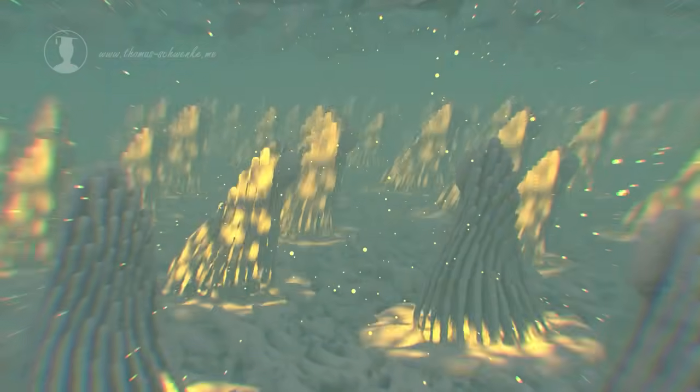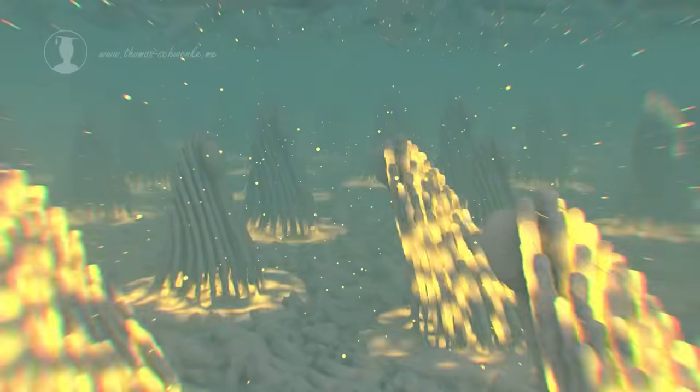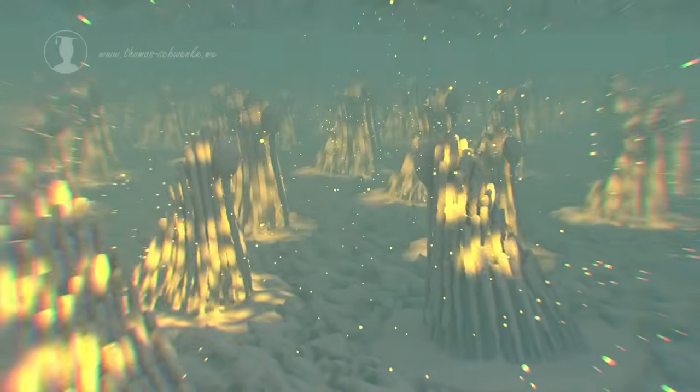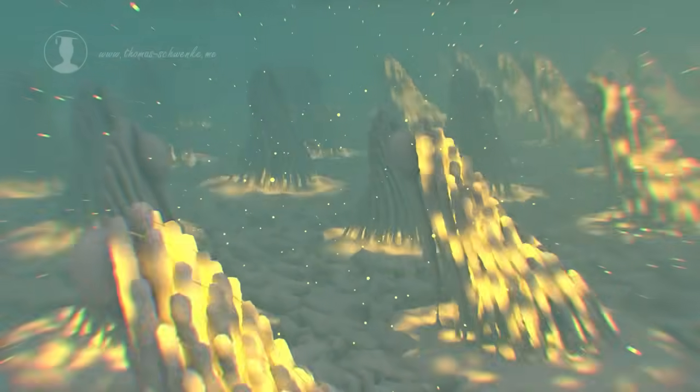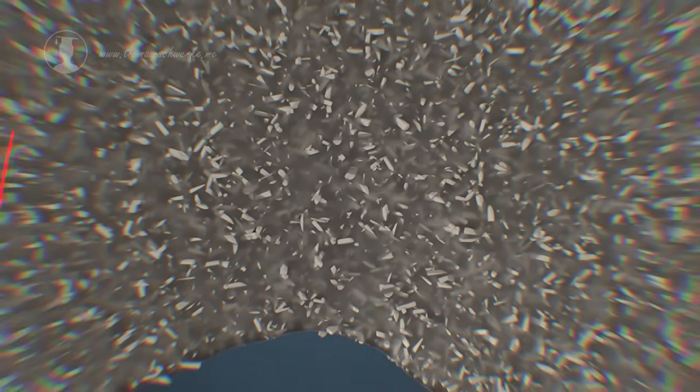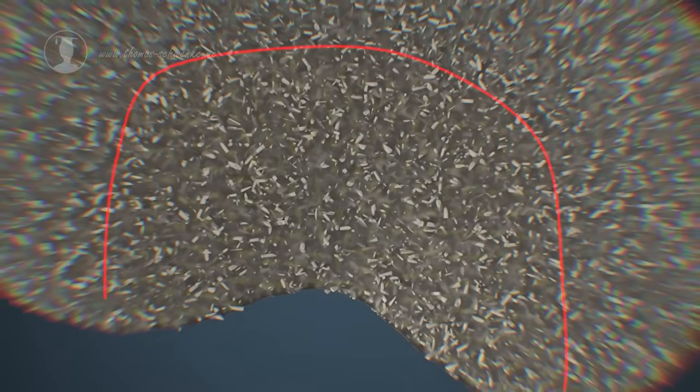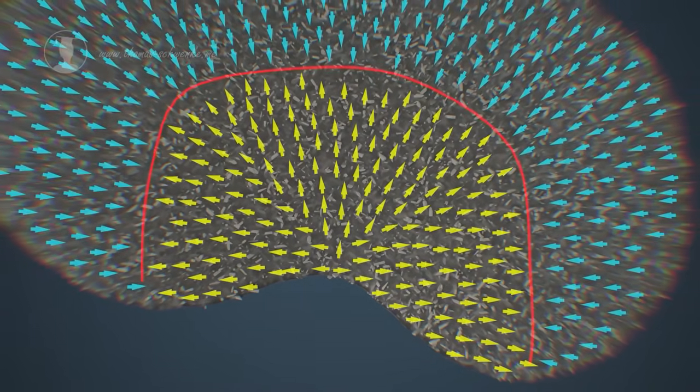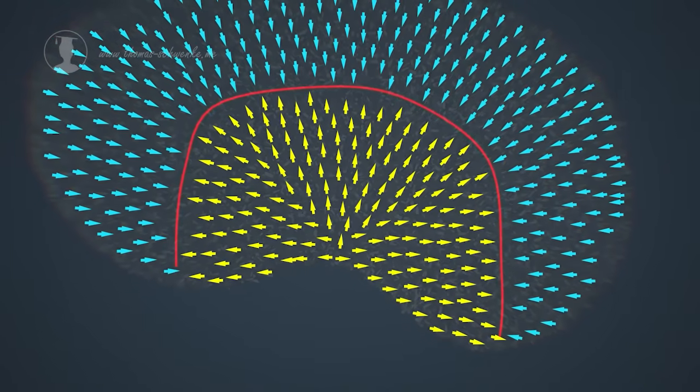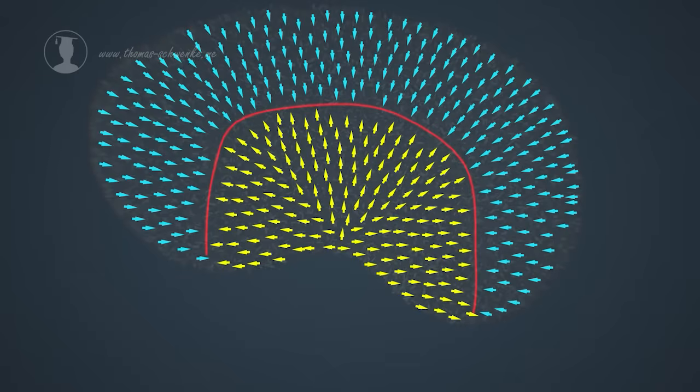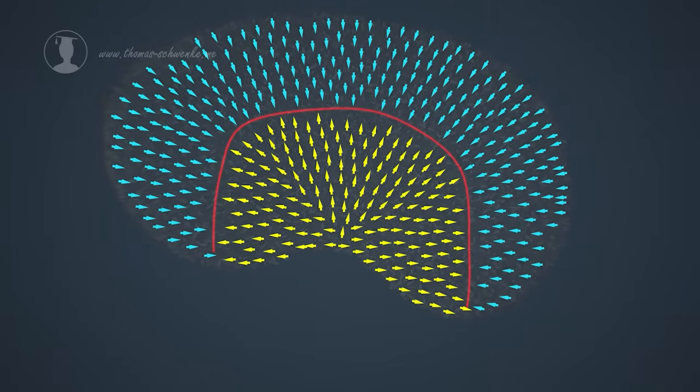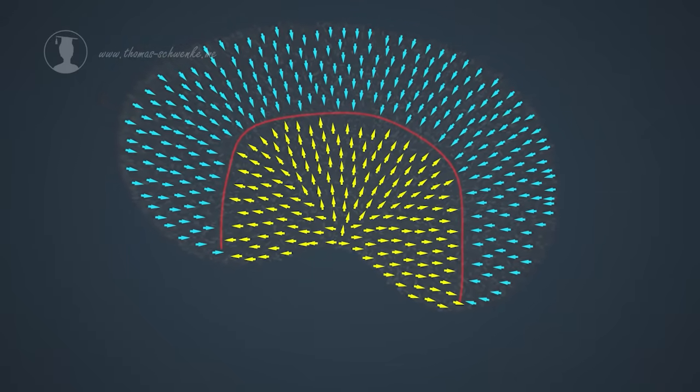We can also clearly see that not all hair cells point in the same direction, but that some hair cells are rotated by 180 degrees. The area in which the hair cells change direction is called striola. Both utricle and saccule have a striola. It runs through the centre of each macula and divides the hair cells into two oppositely oriented groups. The small arrows represent the orientation of the approximately 30,000 hair cells in the utricle. We can clearly see that the striola has an arcuate course and that there are hair cells for every possible direction.